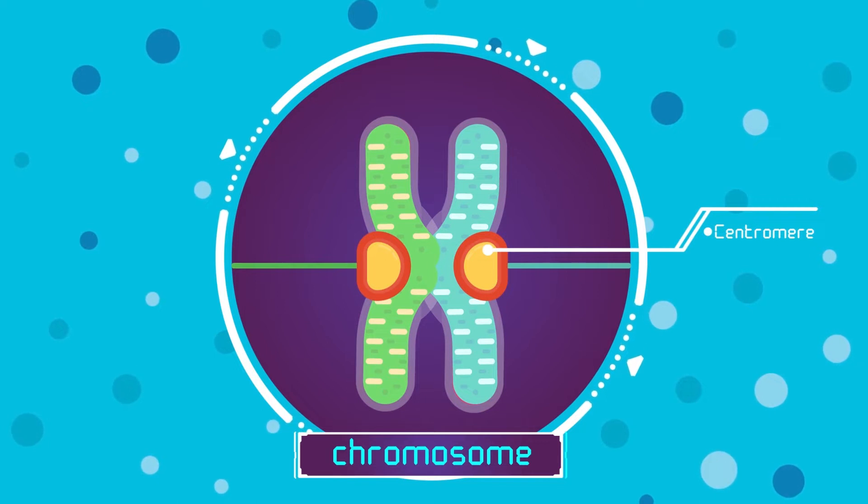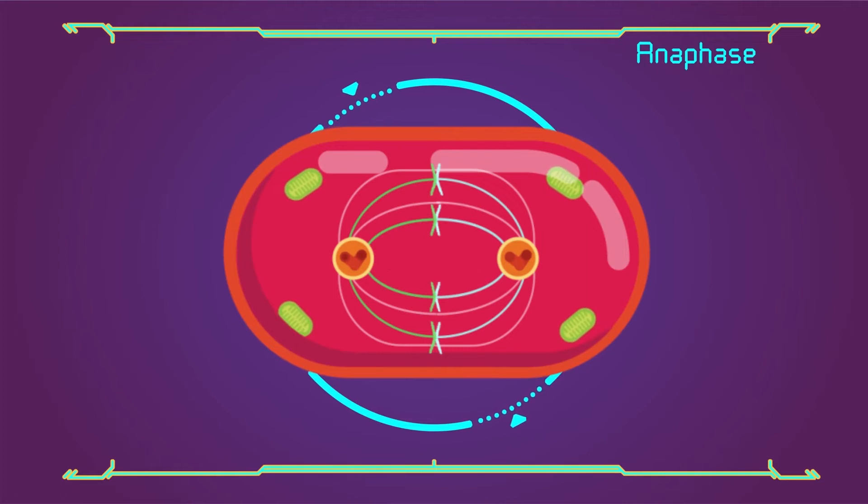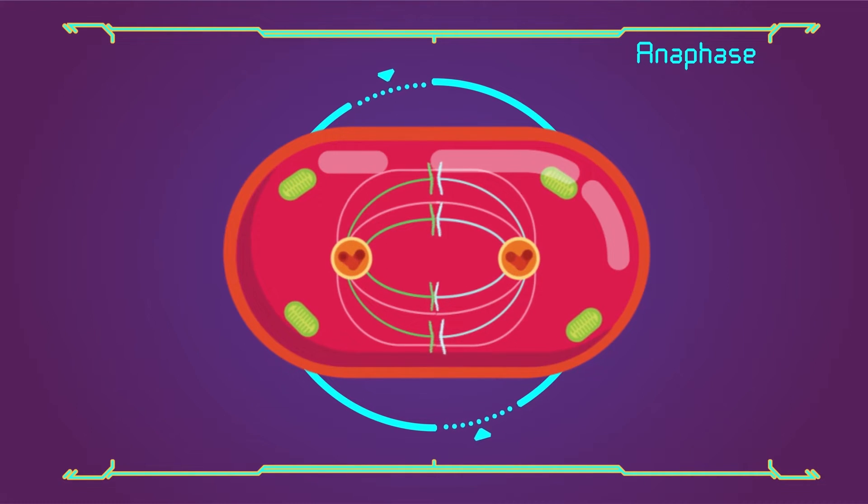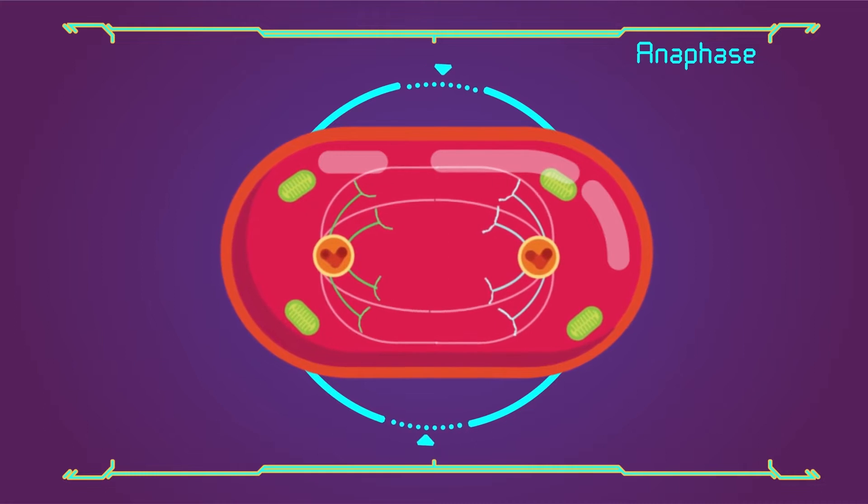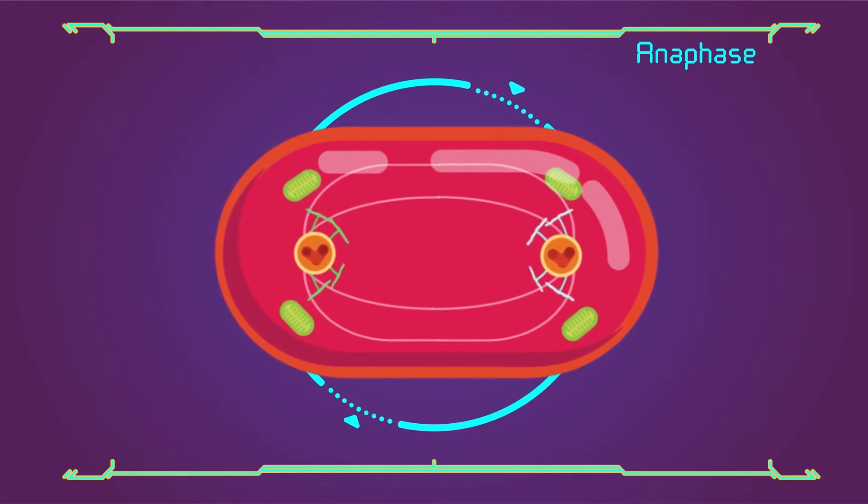Anaphase: here we go, the separation begins. Half of the chromosomes are pulled to one side of the cell, half go the other way. When the chromosomes get to the side of the cell, it's time to move on to telophase.